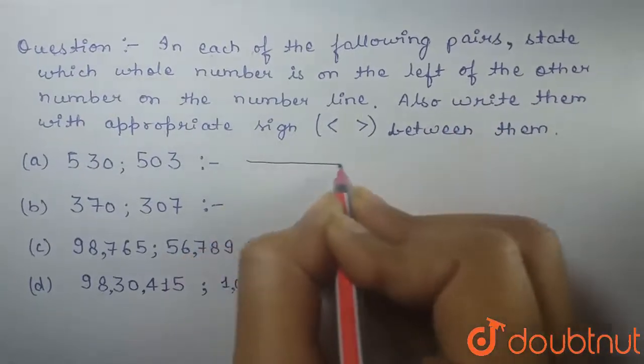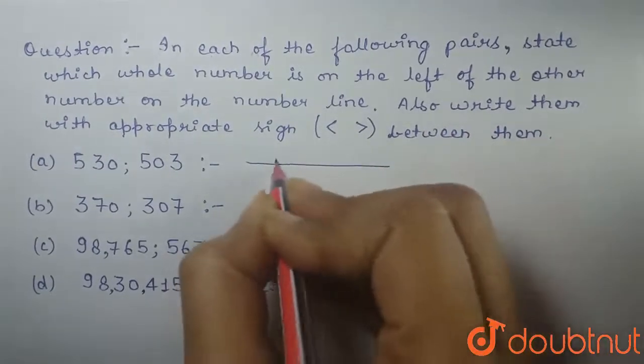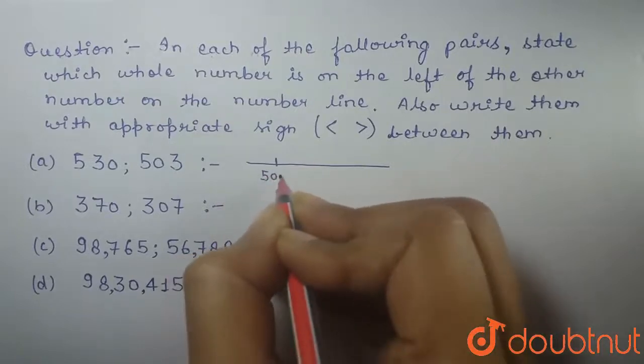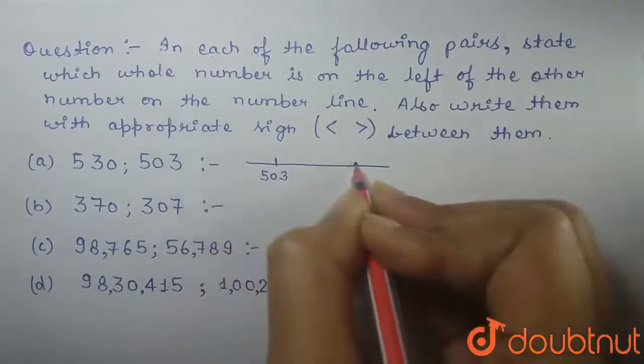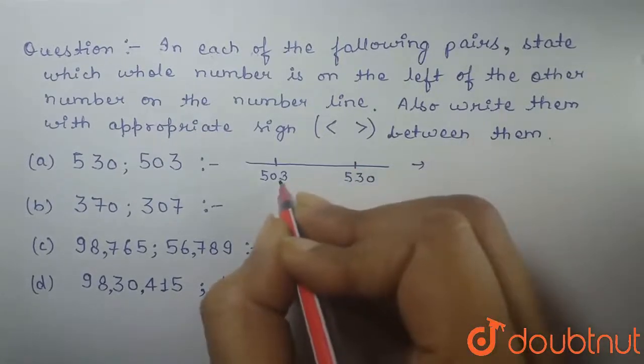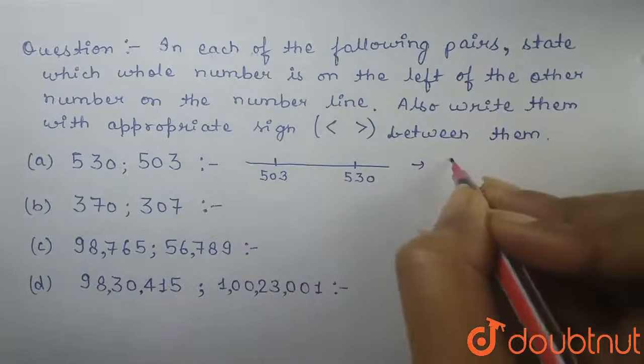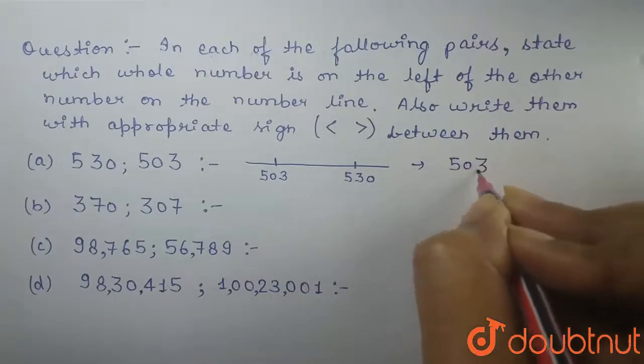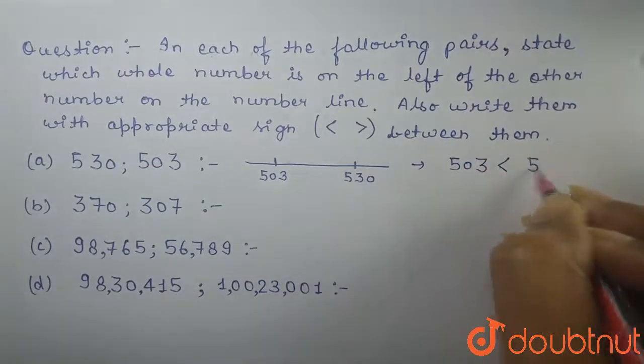If we plot these two numbers on a number line, 503 comes on the left side of 530. So, 503 is less than 530.